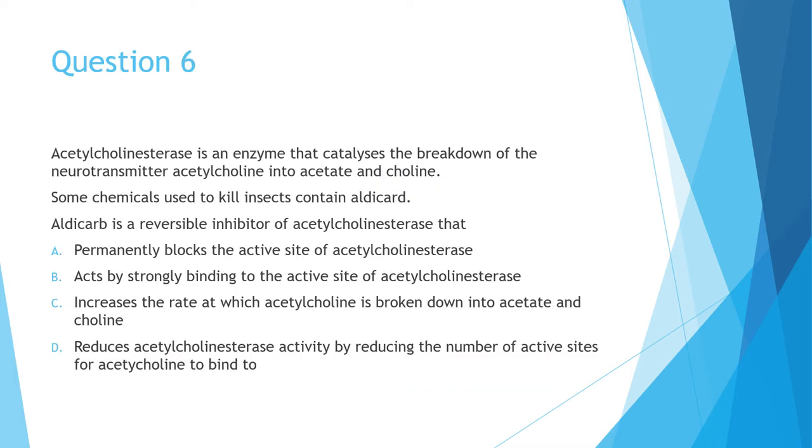Question 6 gives you an example of an enzyme, in this case acetylcholinesterase, which catalyzes the breakdown of the neurotransmitter acetylcholine into both acetate and choline. The question then tells you about aldicarb, which is a reversible inhibitor of this enzyme, and asks you how it does this. This one was a bit tricky in the sense that three of the answers were partially correct. You can quickly eliminate C as being an inhibitor. Aldicarb should be slowing down the rate of breakdown rather than speeding it up. Between A, B, and D, the important thing to note here is the word reversible.